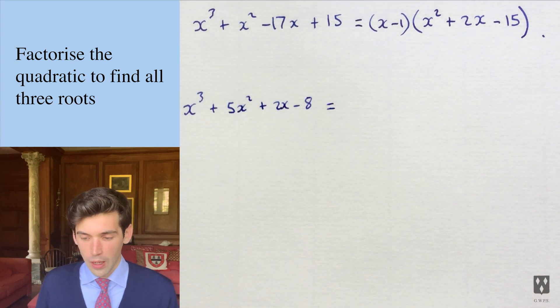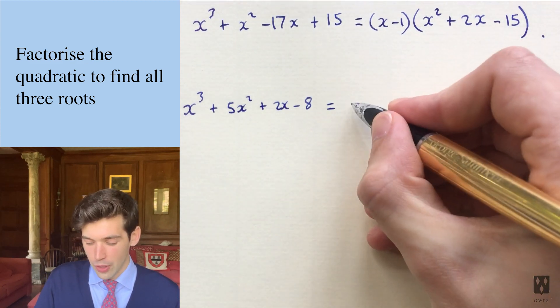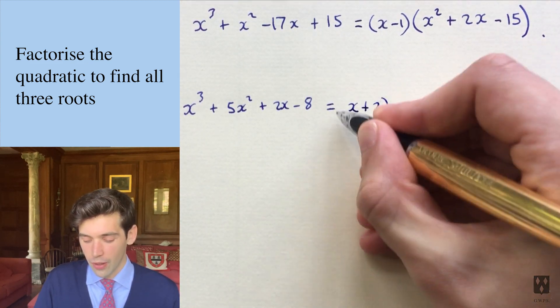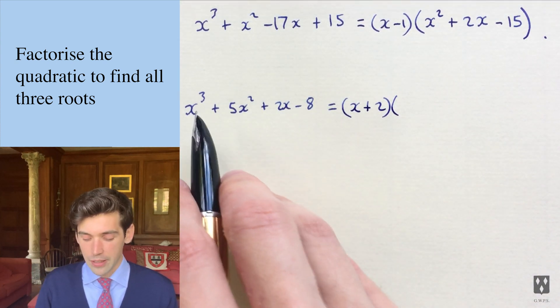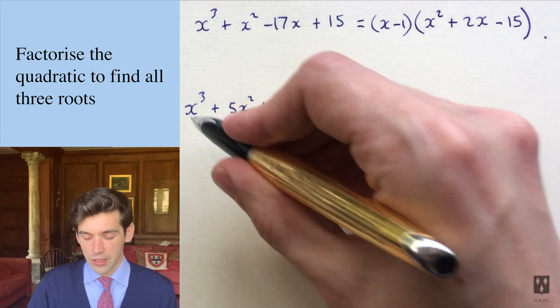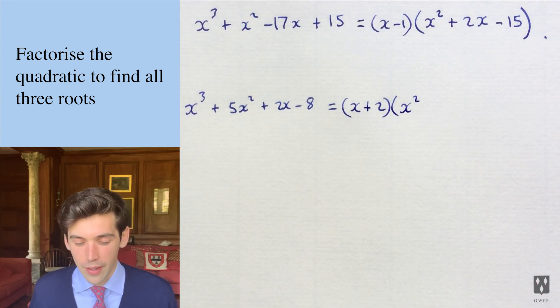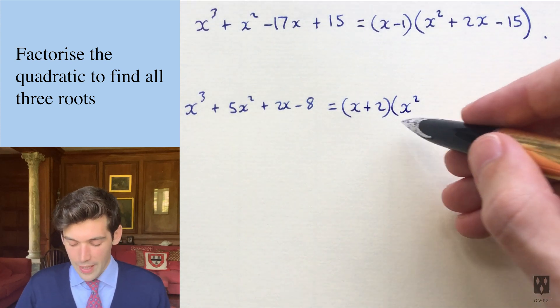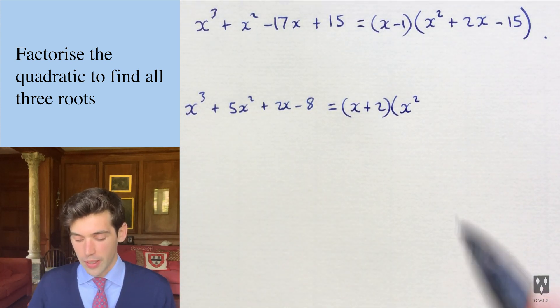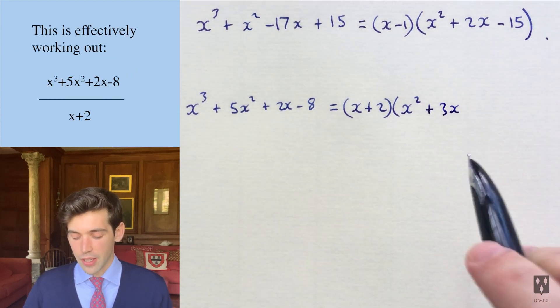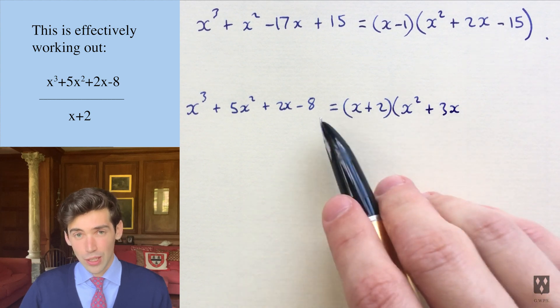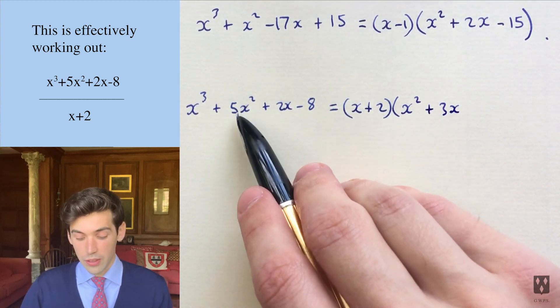And this time you're given that x plus 2 is a factor. So here we go. And what should we do? Well, we start off by thinking, okay, x times x squared gives us x cubed. And then that also gives us plus 2x squared. Now we want 5x squared. So if we put plus 3x here, that 3x times the x makes up the difference to give us the 5x squared.